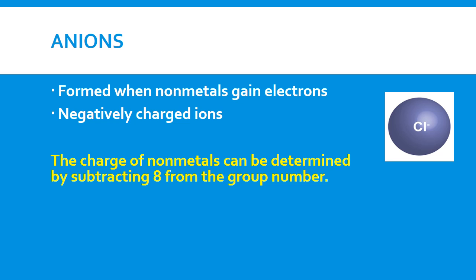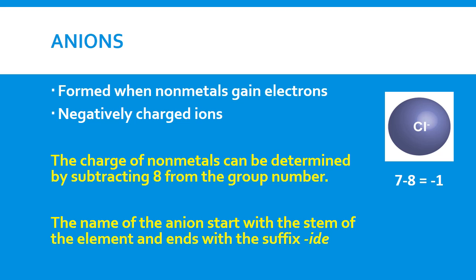In terms of naming these ions, you take the root or stem of the element name. For example, chlorine — the root will be 'CHLOR' — and then you add the suffix '-ide'. So we drop the '-ine' and add '-ide', giving us chloride.